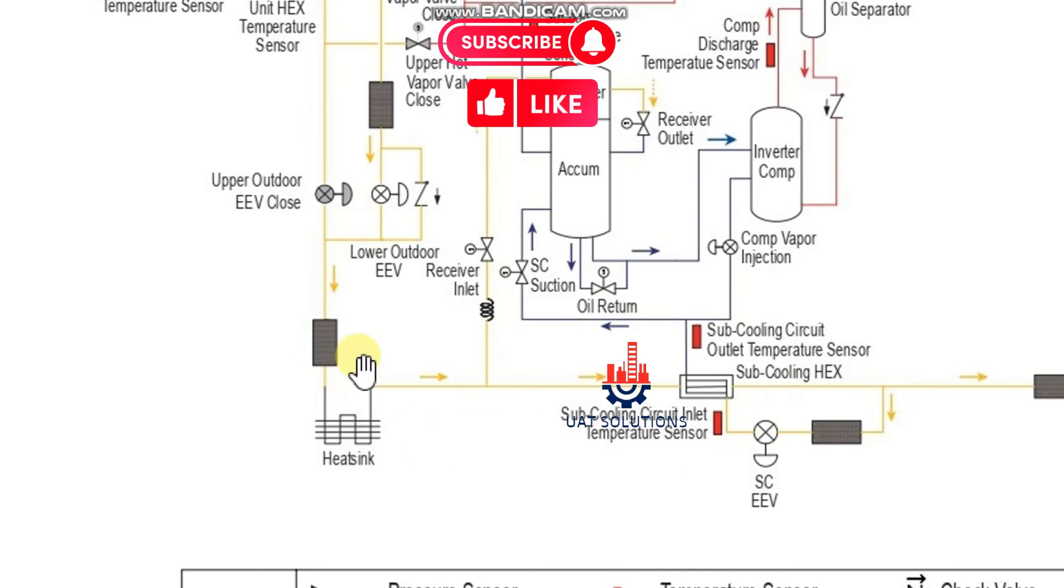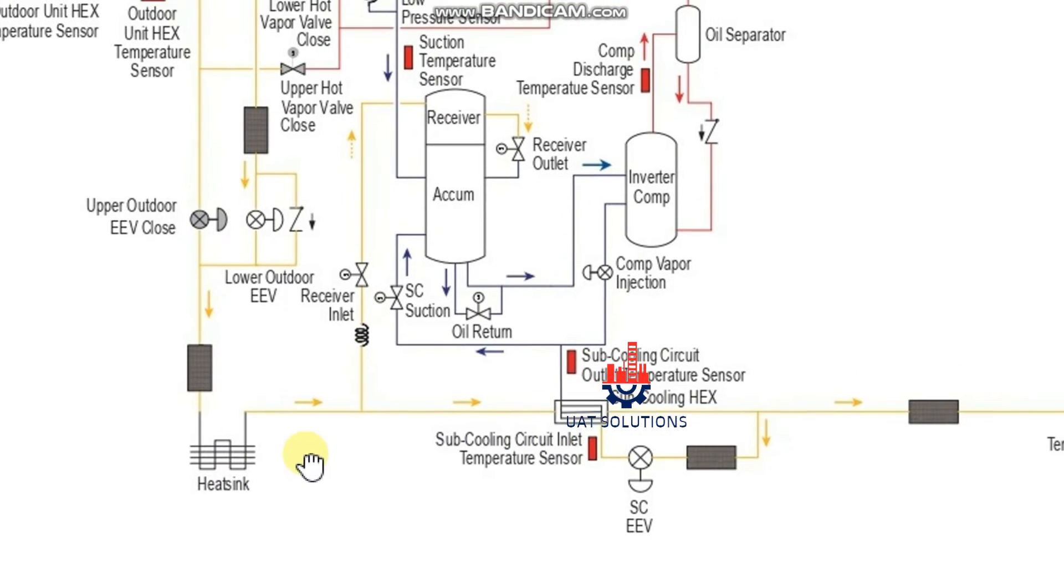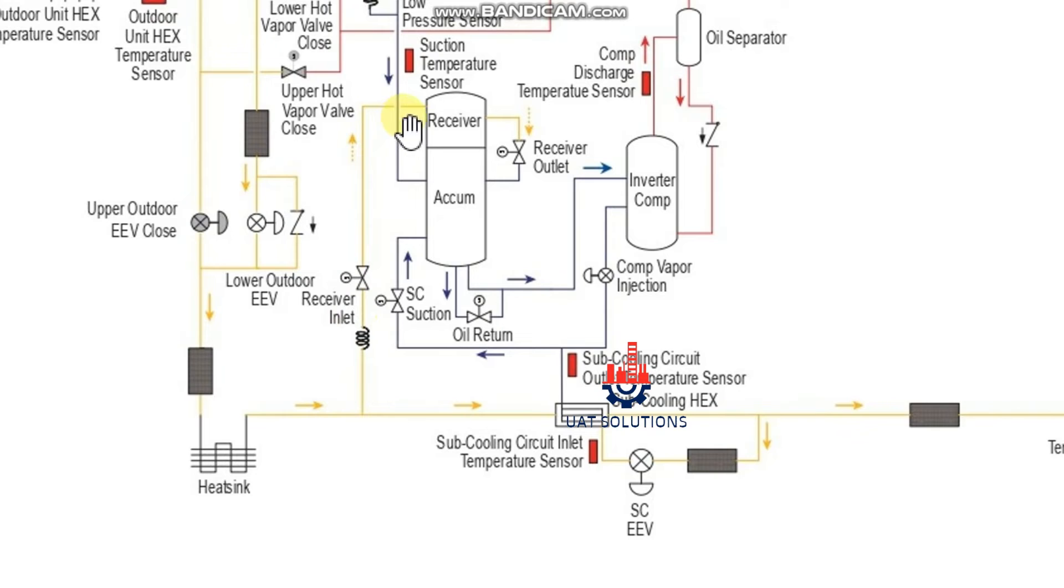Before refrigerant finally goes to indoor units, it passes through heat sink coil which is used to dehumidify the control panel. It also branches via a solenoid valve to the liquid receiver. This valve is only open when there is low gas in the system.